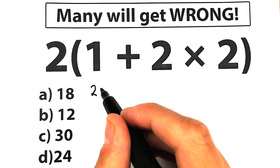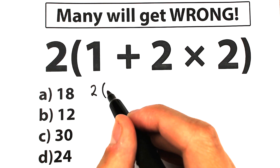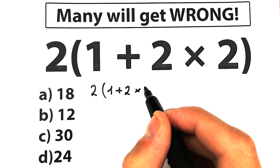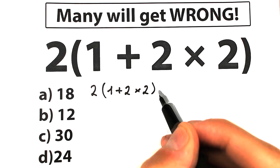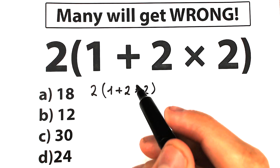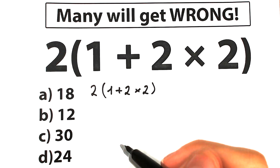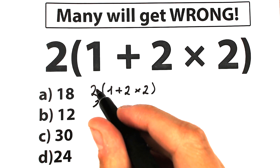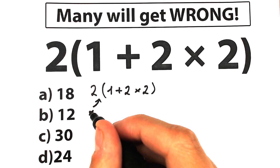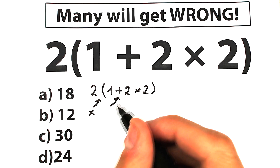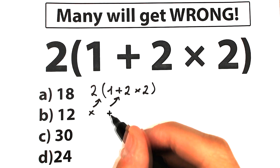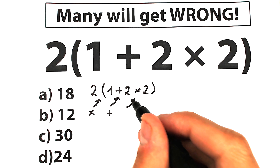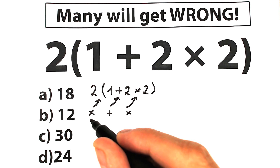I just want to rewrite it. So we have 2, and we have 1 plus 2 times 2. If you look closely, we have a lot of math operations. Right here before the parentheses we have multiplication, right here we have addition, and right here we have multiplication. So we have three operations.